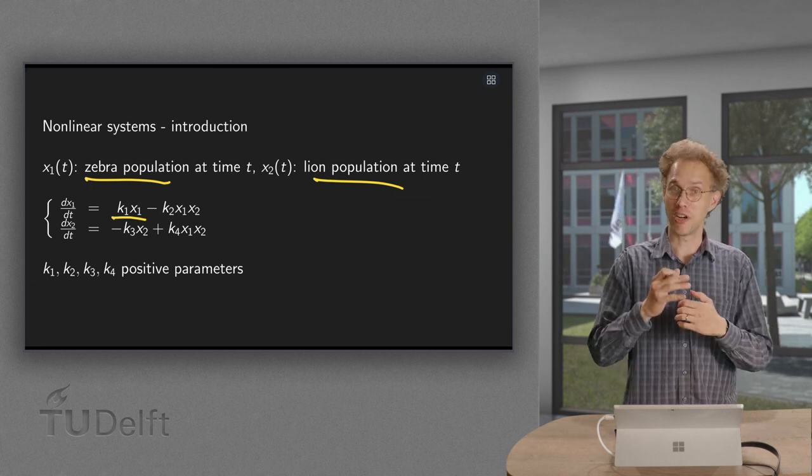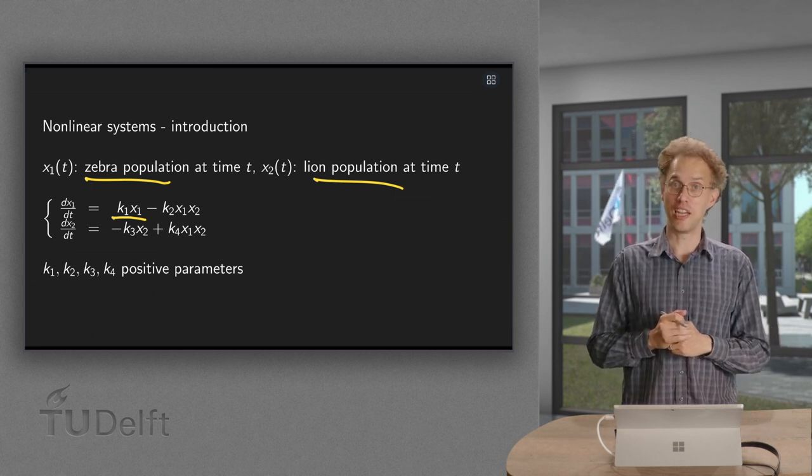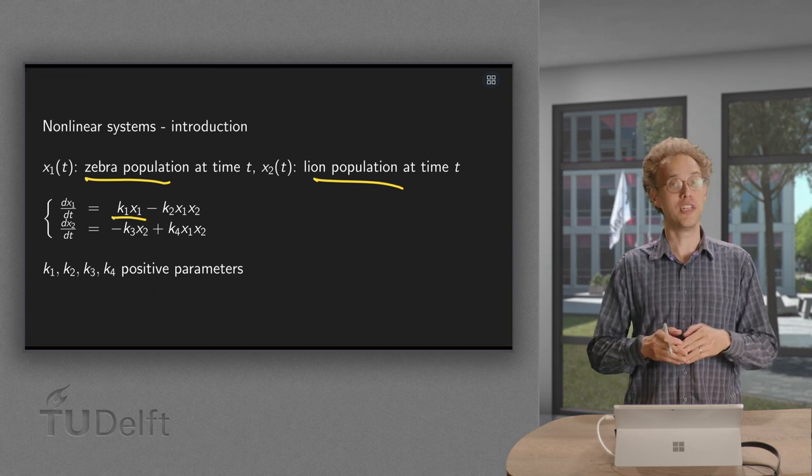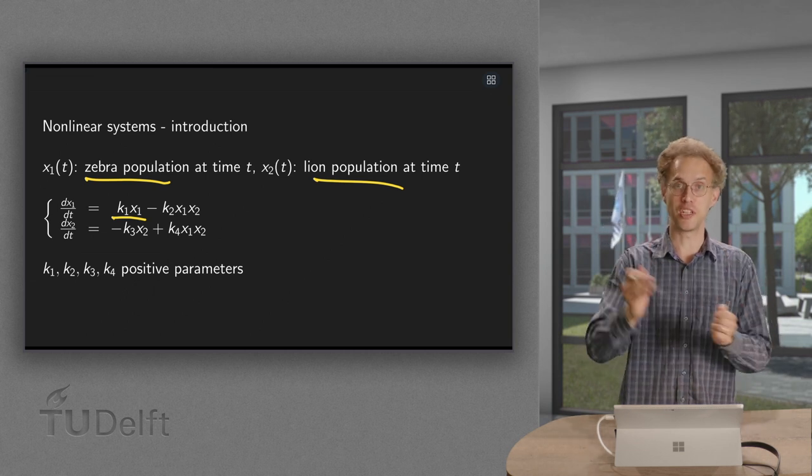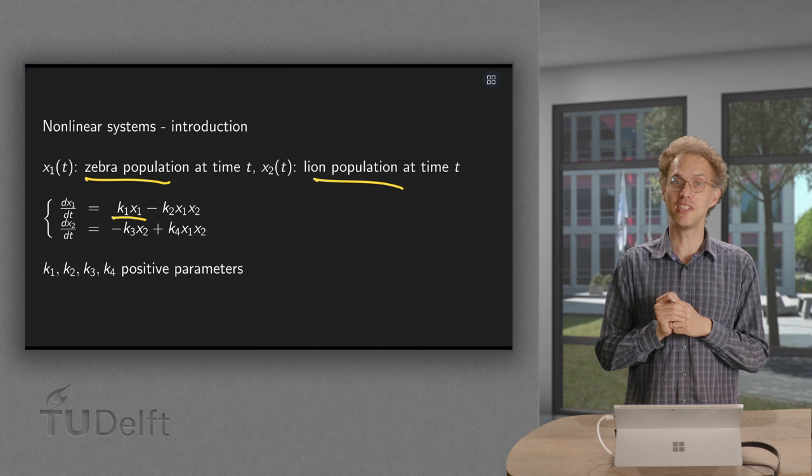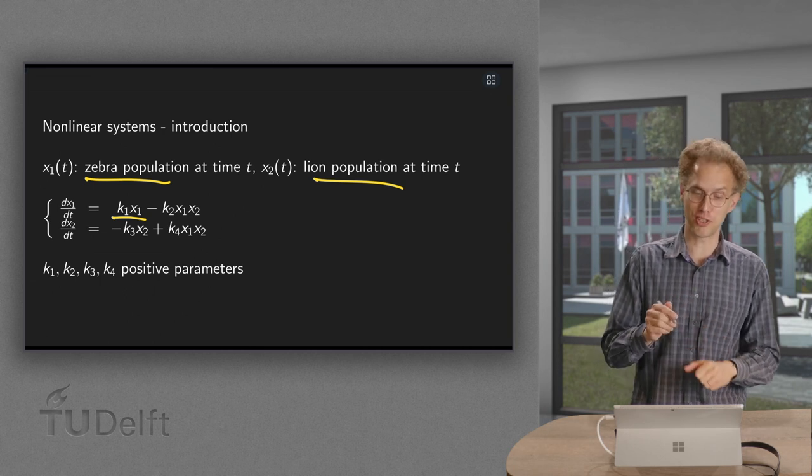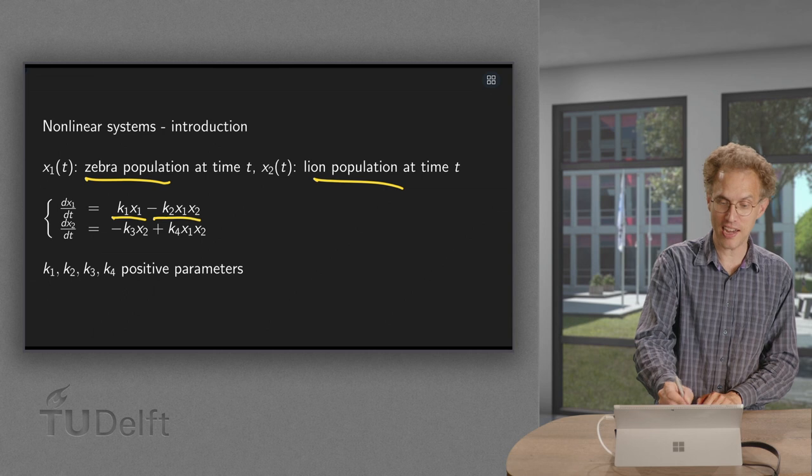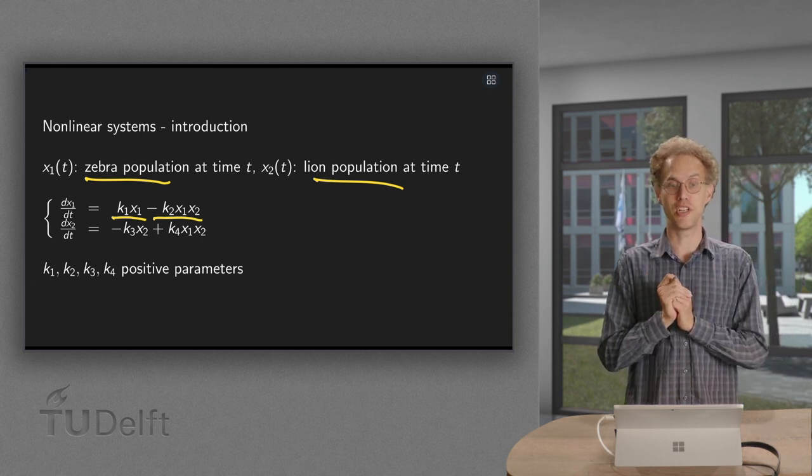However, as soon as there are also lions present, x2, the chance they meet is roughly proportional to x1 times x2. And if they meet, that could be unfortunate for the zebra. So we have a minus k2 times x1 times x2.